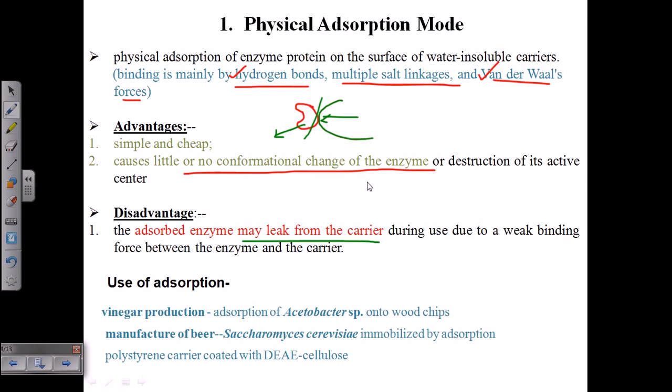The use of this adsorption technique is in vinegar production. We use the absorption of Acetobacter species, a whole cell, onto wood chips. We take whole cell immobilization via absorption where the Acetobacter species is attached to the wood chips in vinegar production.